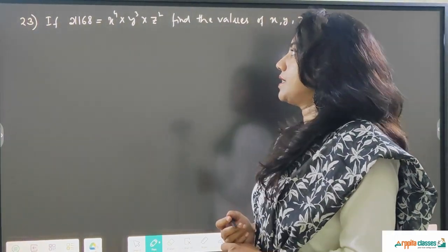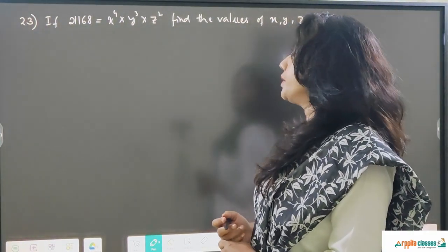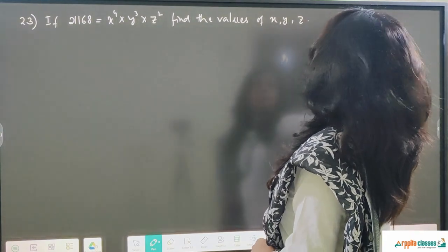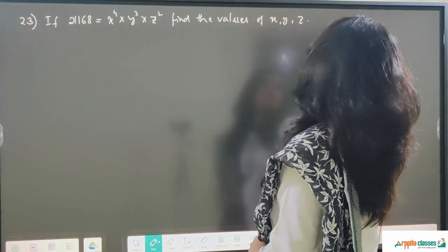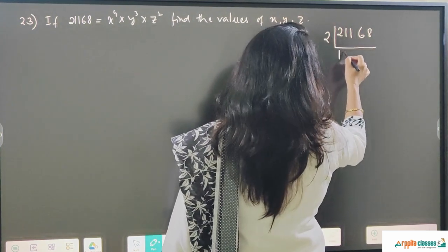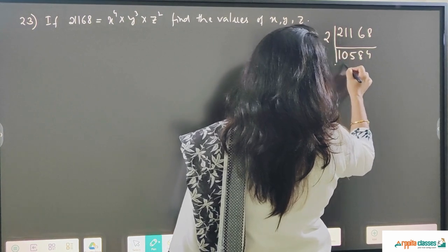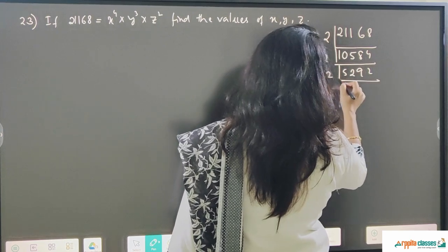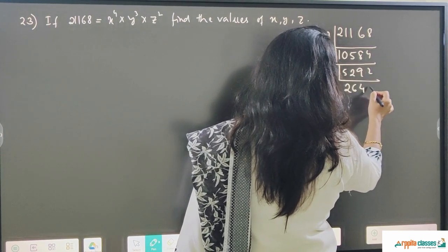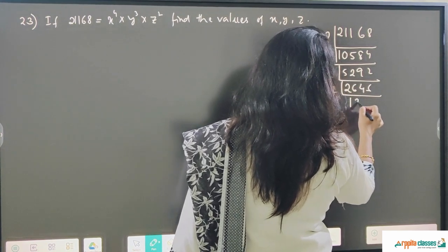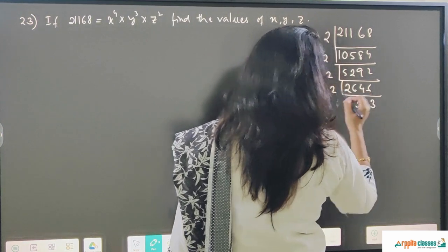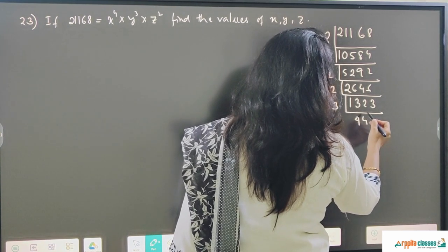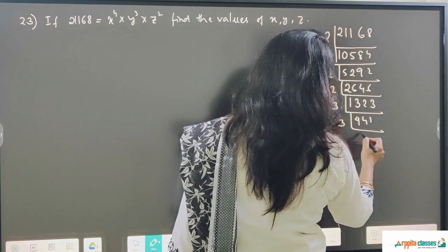Question number 23: 21168 equals x to the power 4 into y to the power 4 into z squared. We need to find out the values of x, y, z. For this we will do the prime factorization of 21168. We start from 2: dividing gives 10584, again divide by 2 gives 5292, divide by 2 gives 2646, divide by 2 gives 1323. Now divide by 3 gives 441.